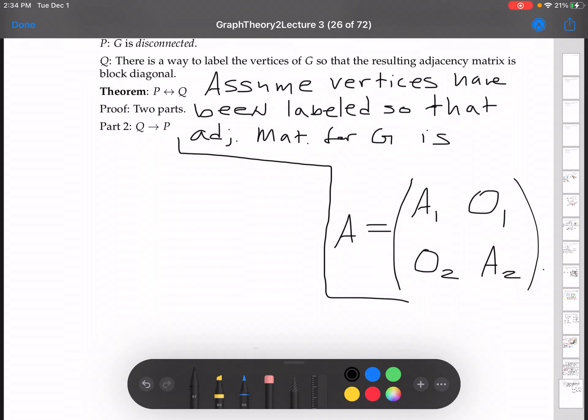So if you think about it, an adjacency matrix defines a graph. So we can define subgraphs G1 and G2 by A1 and A2.